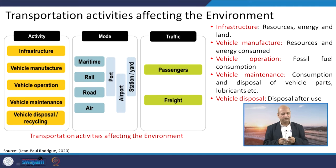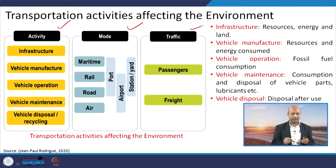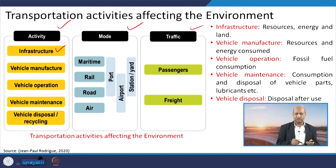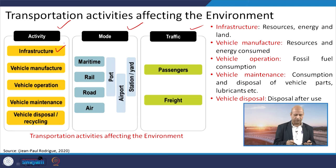The ways different transportation activities affect the environment can be divided into three categories: activities, modes, and traffic. Activities include infrastructure — if you want to travel by road, you need proper roads; for public transportation like buses, you need bus stands; for railways you need tracks and stations; for aviation you need airports. Vehicle manufacturing is another activity — you need to buy a vehicle, which requires an industry to produce it.